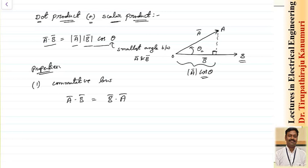Because in both cases, we are only taking the magnitude of a, magnitude of b, and cosine of the angle between them. That angle, whether you take from a to b or b to a, it is not going to affect. That means a dot b is equal to b dot a — it will be magnitude of a into magnitude of b into cos of the angle between them.